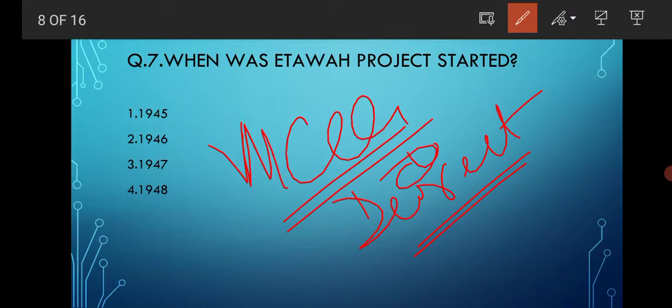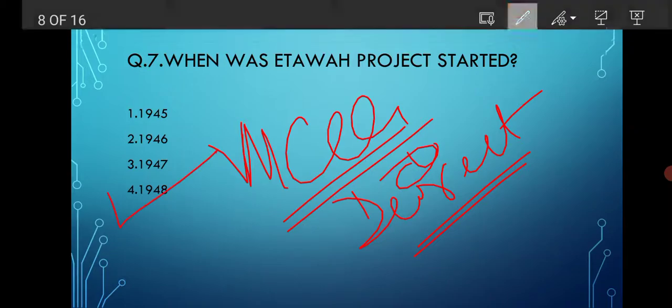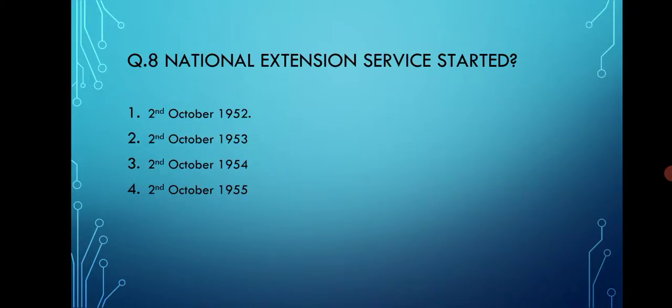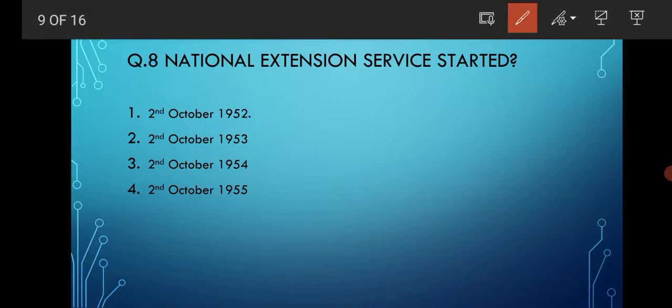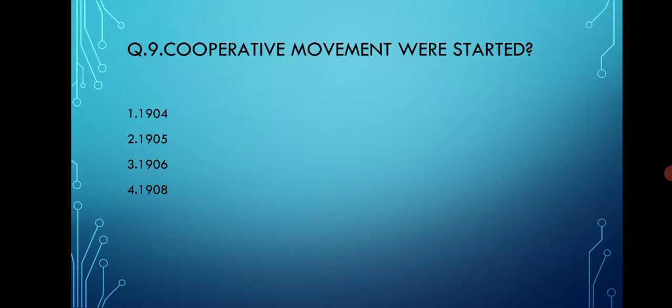The correct option for the Etawah Project is option number four, that is 1948. Next is National Extension Service — when was it started? Options are 2nd October 1952, 2nd October 1953, 2nd October 1954, and 2nd October 1955. The correct option is 2nd October 1952.